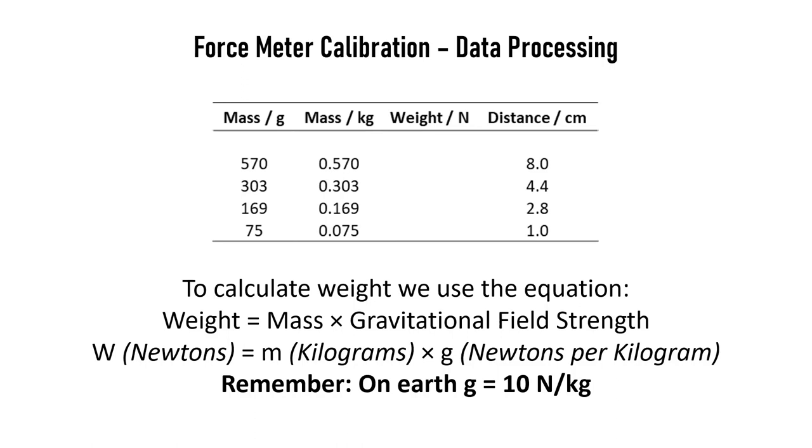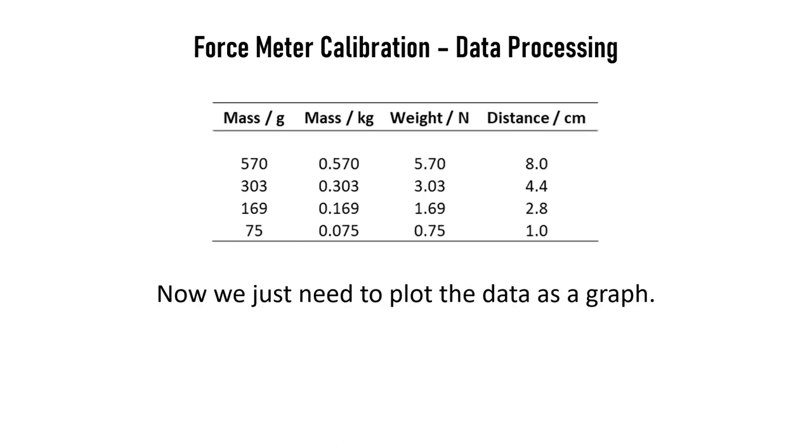So, to calculate the weights, we just times the number of kilograms by 10. Nice and straightforward. So, we'll end up with 5.7, 3.03, 1.69 and 0.75 newtons. Well, now we've got the weight in newtons, that force, and the distance that our little elastic band moved on our force meter. We can plot this as a graph.